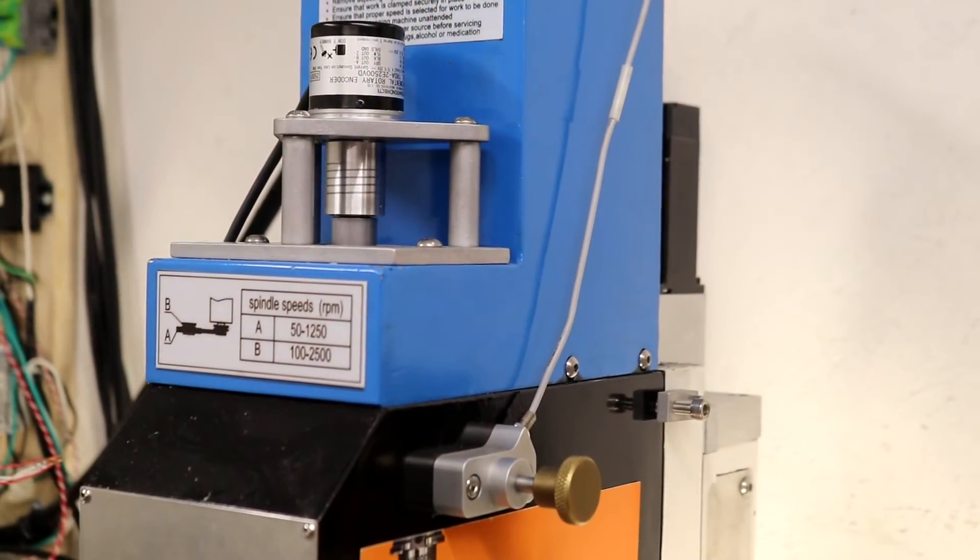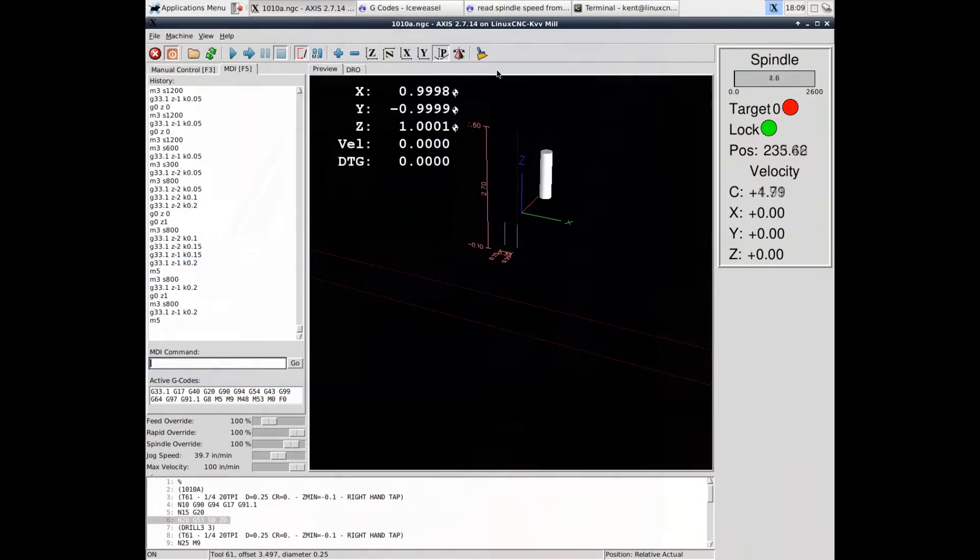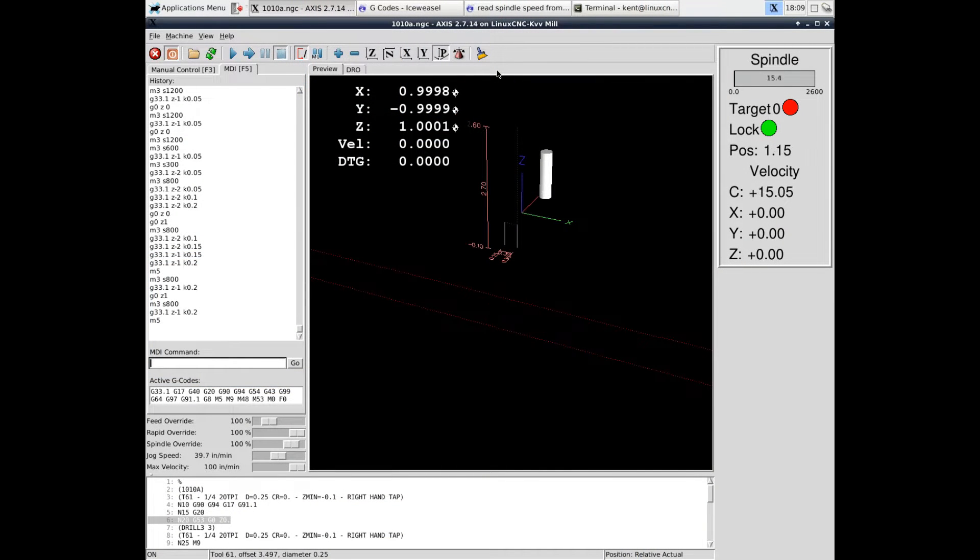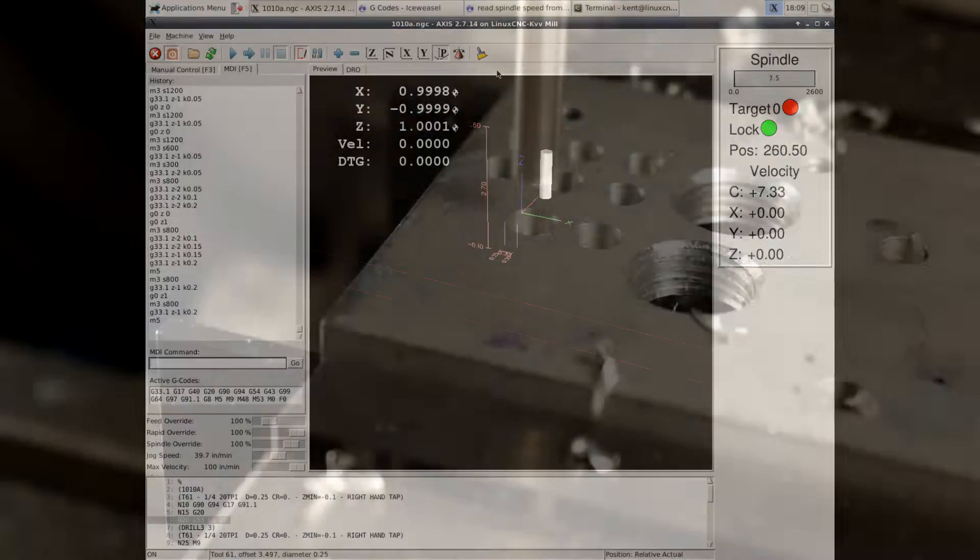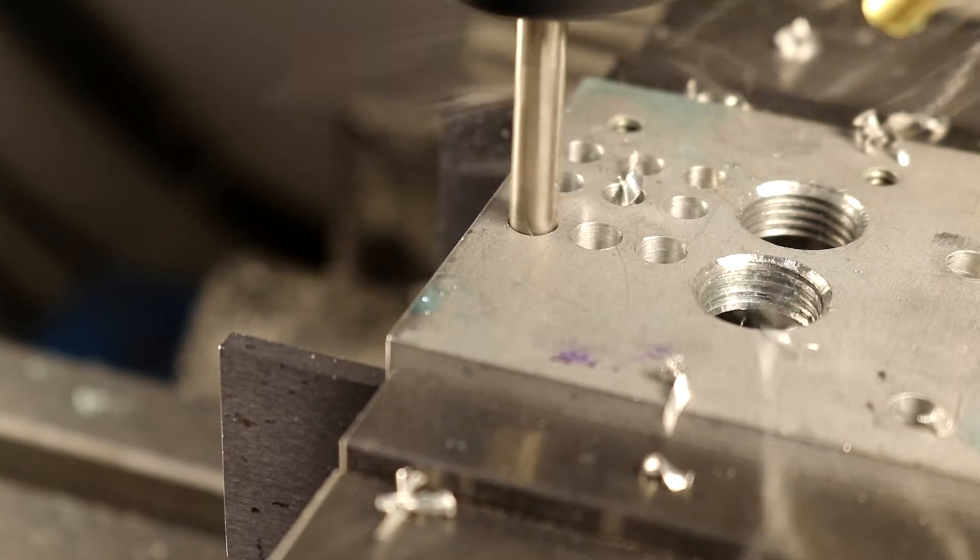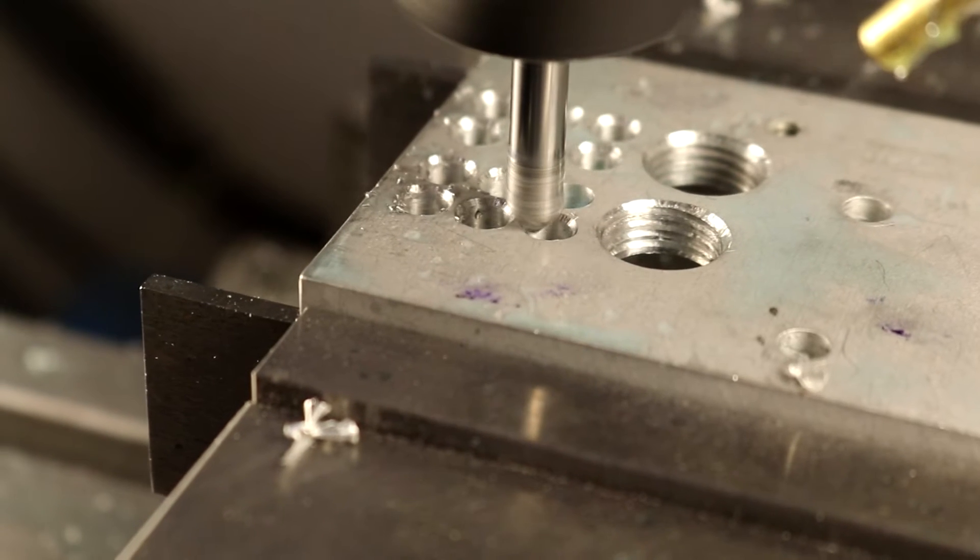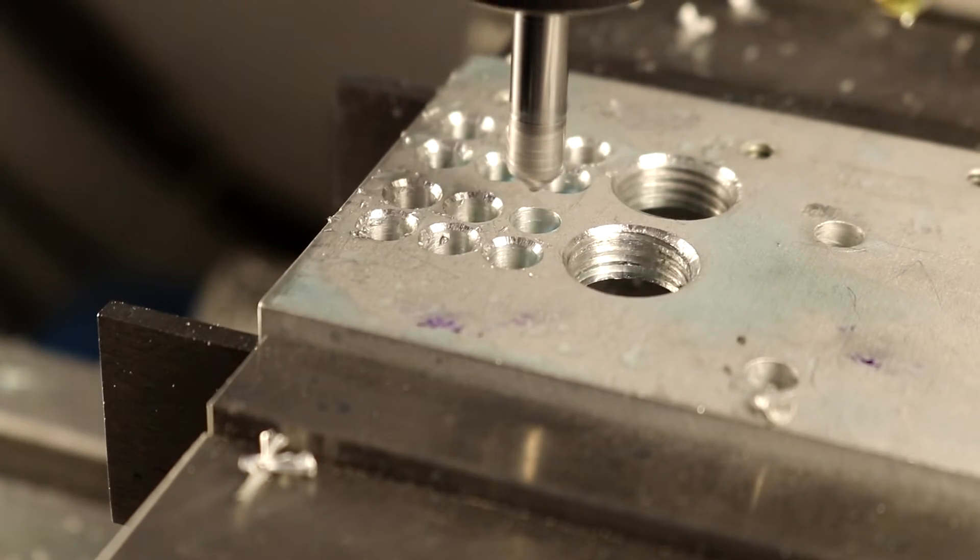The rotary encoder gives position feedback to LinuxCNC, which I use to calculate the velocity and position of the C axis. This might be useful for operations like broaching, where you'd want to know the angular position of the spindle precisely, but you'd have to come up with a means to lock the spindle at that position.